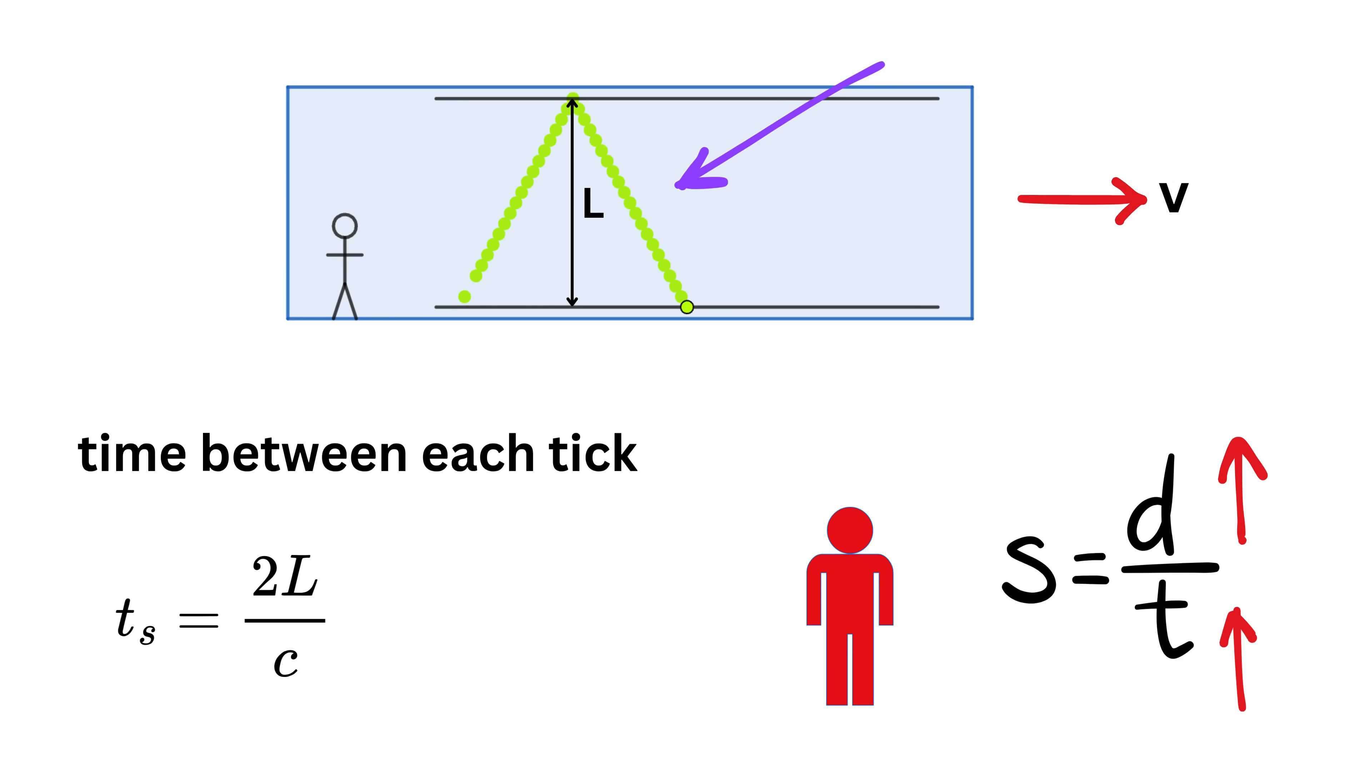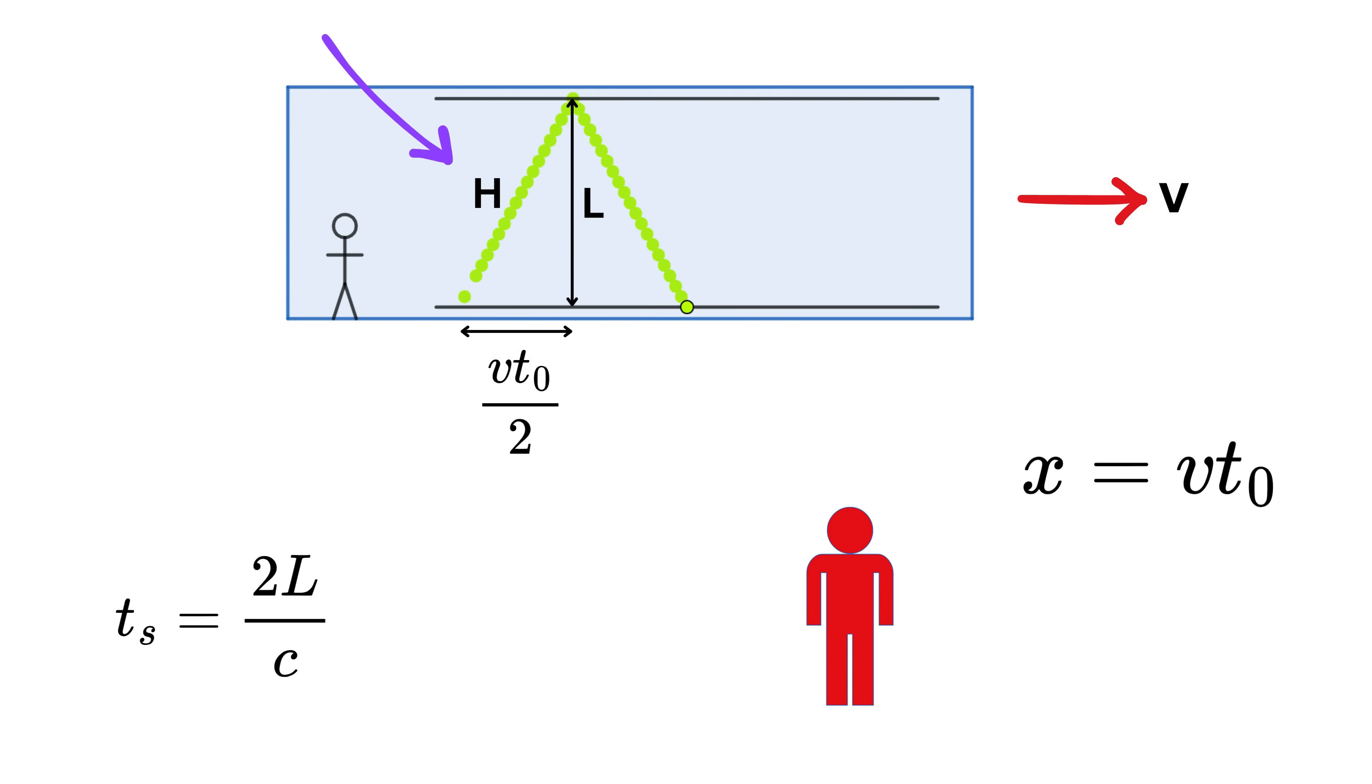Okay, now consider this triangle. This is L and this is x. What will be this x? Simple, it will be v times t0, assuming t0 is the time taken by the light pulse to travel from the bottom mirror to the top mirror and then return back as seen by you, the outside observer. This means it is the time between each tick for an observer outside the spaceship. v is the speed of the spaceship, and time multiplied by speed gives distance. So this distance will be v times t0 over 2. So the hypotenuse h will be square root of L squared plus (v times t0 over 2) squared.